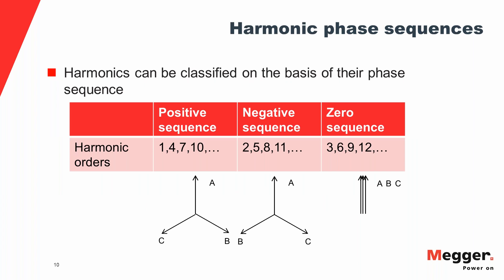Harmonics can also be classified in terms of their phase sequence. Phase sequence refers to the phase relationship between the three phases in a three-phase system. In a positive sequence system, B lags behind A by 120 degrees, and C lags behind B by 120 degrees — moving clockwise on the vector diagram. In a negative sequence system, it's the opposite: B leads A by 120 degrees, C leads B by 120 degrees, moving counterclockwise. In a zero-sequence system, there is no phase difference between the three phases — all three phases are in phase with each other.